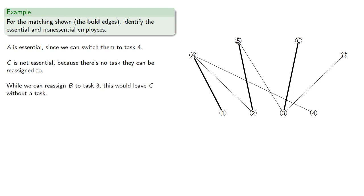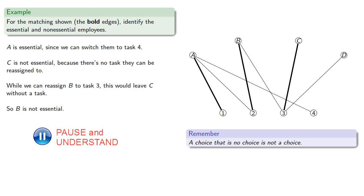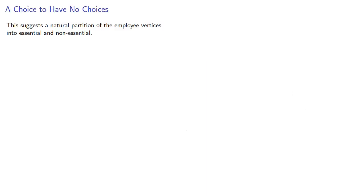While we can reassign B to task 3, this would leave C without a task. So we can't really do that. And remember, a choice that is no choice is not a choice. So B is not essential. Even though it appears we can reassign B, we can't actually do that without displacing somebody else.